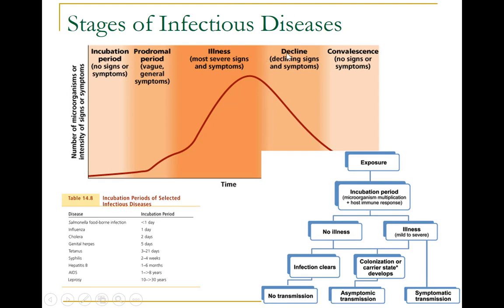Following the prodromal period is the period of illness, during which the signs and symptoms of disease are most obvious and severe. The period of illness is followed by the period of decline, as shown here, during which the number of pathogens begins to decrease and the signs and symptoms of illness begin to decline. However, during the decline period, patients may become susceptible to developing secondary infections because the immune system has been weakened by the primary infection.